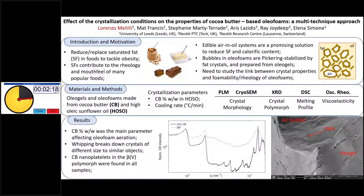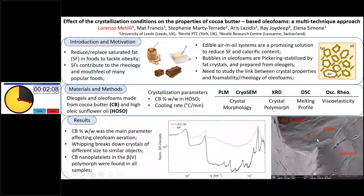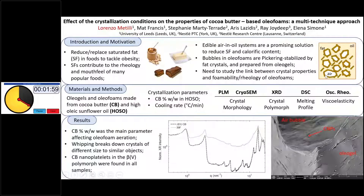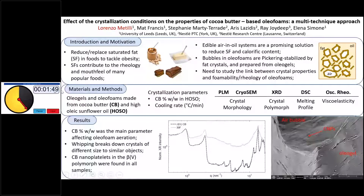One viable strategy that has been suggested is to use oleofoams, which are edible air-in-oil systems that can lower both the amount of saturated fat and the calorific content. This is done by taking a dispersion of fat crystals in oil — called an oleogel — whipping it using a mixer so that air bubbles become stabilized by the fat crystals. Since the crystals play a very important role in this material, it's very important to study the link between crystalline properties and the properties of the oleofoams.